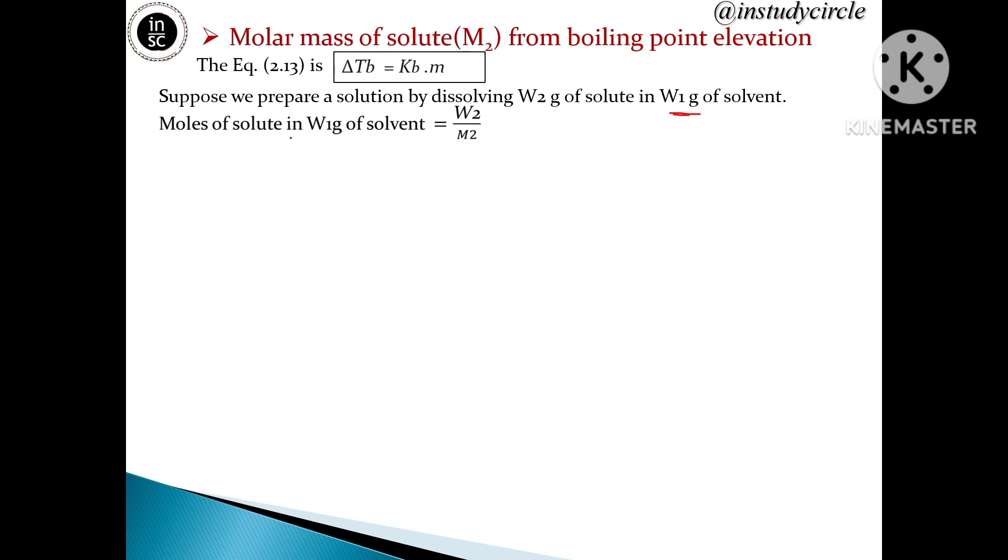Moles of solute n₂ in W₁ grams of solvent equals W₂/M₂, where M₂ is the molar mass of solute. Mass of solvent: W₁ grams = W₁ gram/1000 gram per kg = W₁/1000 kg.